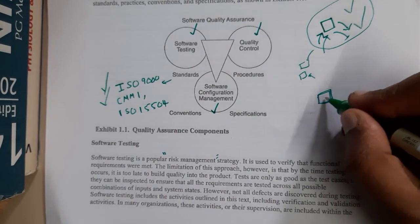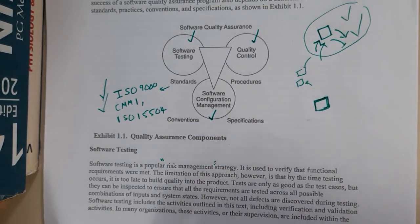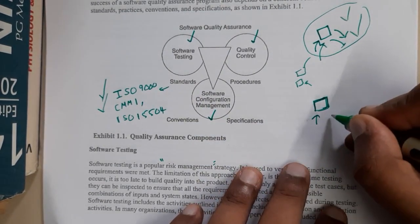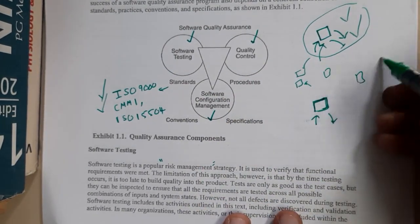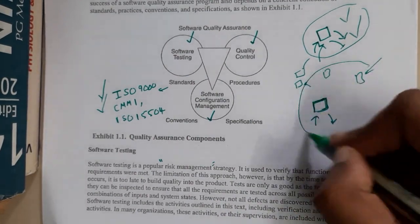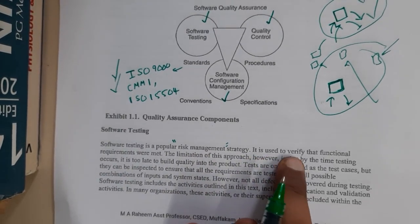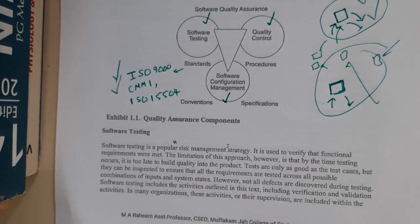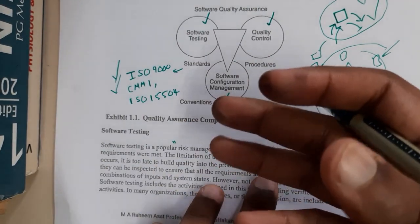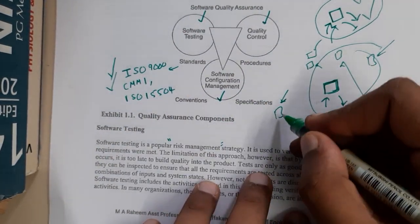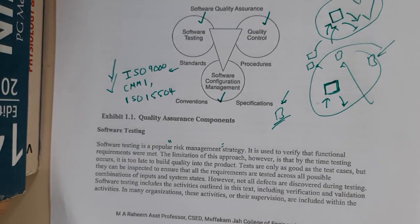Why is it called a risk management strategy? Assume you created an online website or store, and you directly launched it without testing. At this moment some user could invest money and the money could end up going to someone else's account instead of the owner's account — that is a huge loss of money. So testing helps you in risk management and verifies that functionality requirements are met.